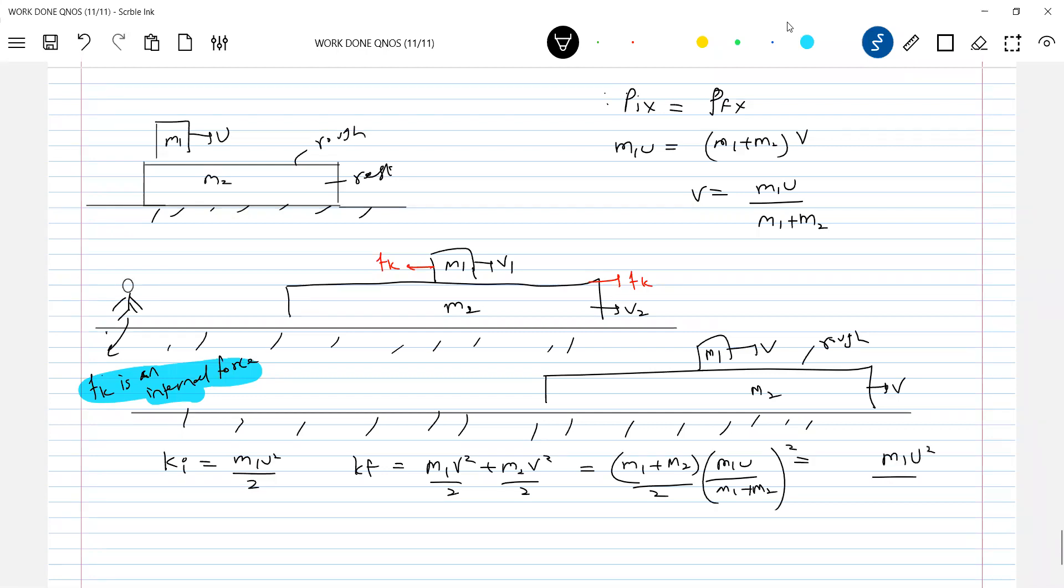You can see from here: M1 U square by 2, M1 by M1 plus M2. What is V? M1 U by M1 plus M2. M1 U square by 2 M1 plus M2. This will be V.